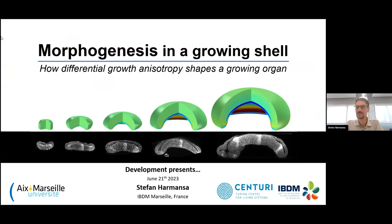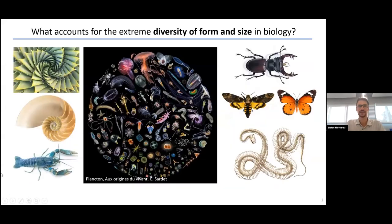I'm going to guide you through a project where the ECM plays a major role. I think, as most of you, we share this excitement for the huge diversity that we see in biological systems — a huge diversity in shape and form. It's a fascinating question to understand how these differences in shape and form are controlled on a molecular and conceptual level.